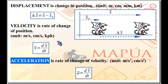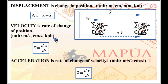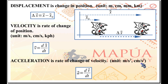In terms of units, velocity has units of meters per second, centimeters per second, kilometers per hour, and so on. Acceleration has units of meters per second squared, centimeters per second squared, and so on.